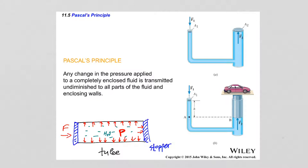This leads to Pascal's principle. Pascal's principle states that any change in the pressure applied to a completely enclosed fluid is transmitted undiminished to all parts of the fluid and enclosing walls. This is an extremely important principle because it allows you to determine the pressure somewhere in a fluid when you know the pressure at another point in that container.